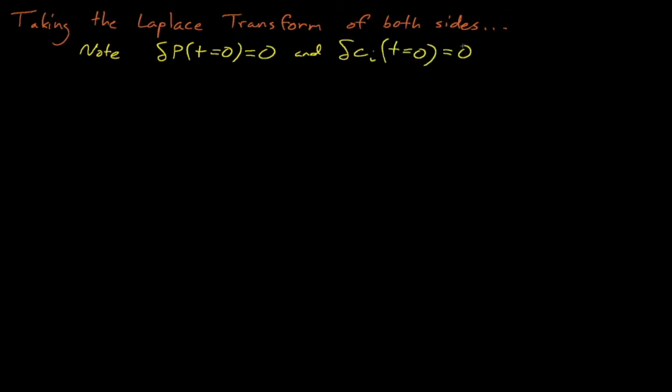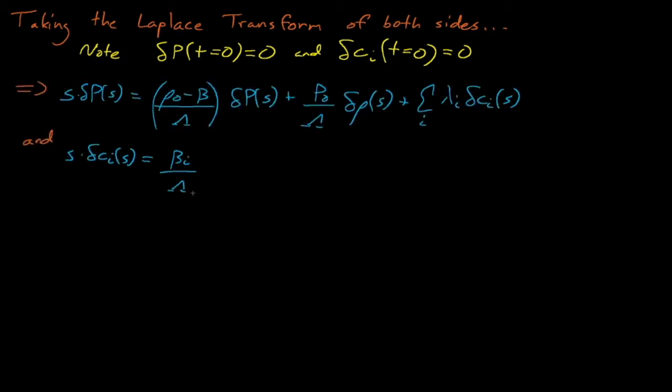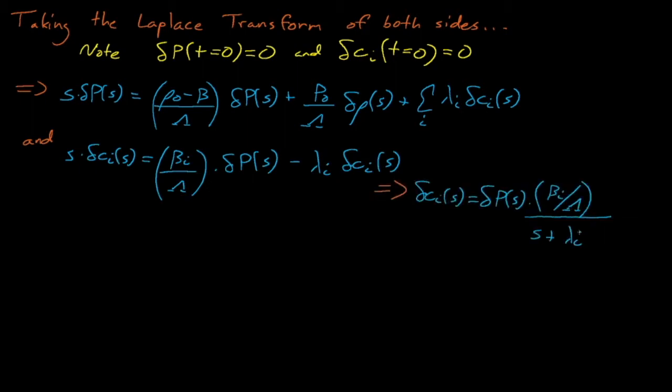We next take the Laplace transform of both sides of these equations, noting that the initial conditions for delta P and delta C give us that they are equal to zero at time T equals zero. From here, we can solve for an expression for delta C of I as a function of S, and we plug this expression into our other simultaneous equations, which after moving around some terms, we arrive at this expression for delta P of S divided by delta rho of S.